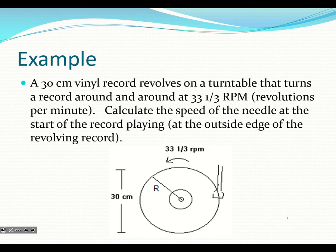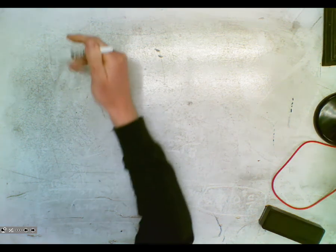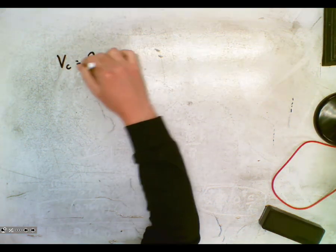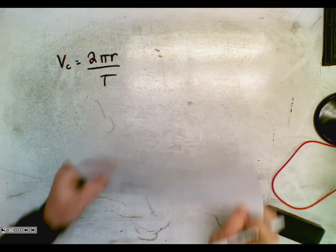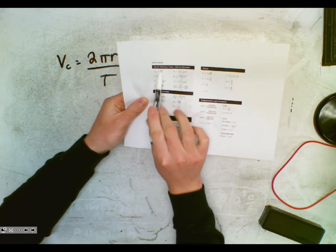Let's do a question. A 30 centimeter vinyl record revolves around a turntable and turns at 33 and 1/3 rotations or revolutions per minute. Calculate the speed of the needle at the start of the record playing, at the outside edge. So they give us the diameter of the record and 33 revolutions per minute. Whenever we have per minute, it means this is a frequency. We can use our new formula vc equals 2 pi r over T, found under the speed section of our formula sheet.